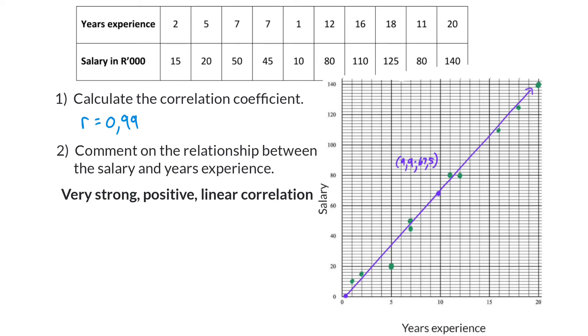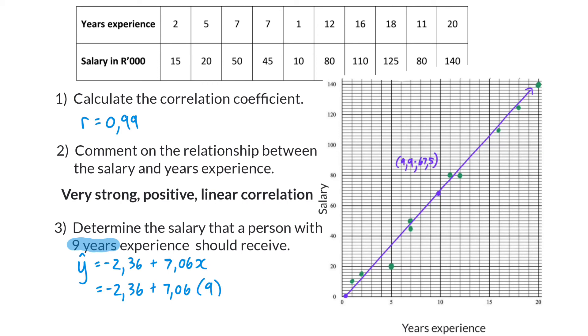Of course, the weaker the correlation, the less reliable the predictions will be. Determine the salary that a person with 9 years experience should receive. Because in the previous lesson we already determined the equation for the regression line, we can simply substitute the 9 years into X's place and determine the Y value that will then represent the salary.